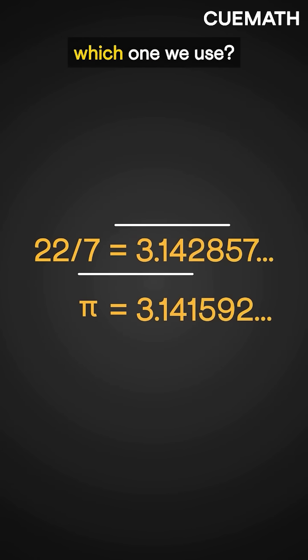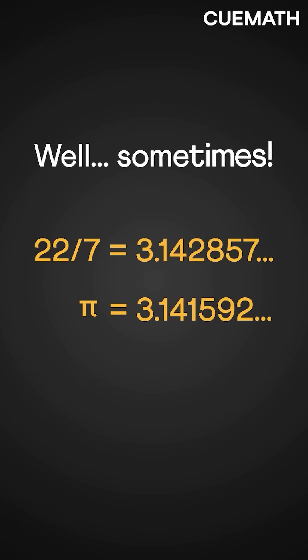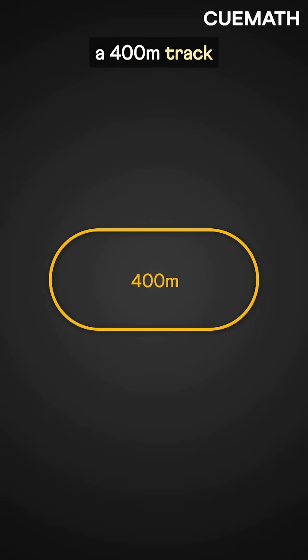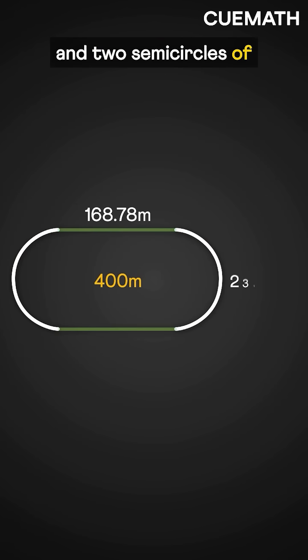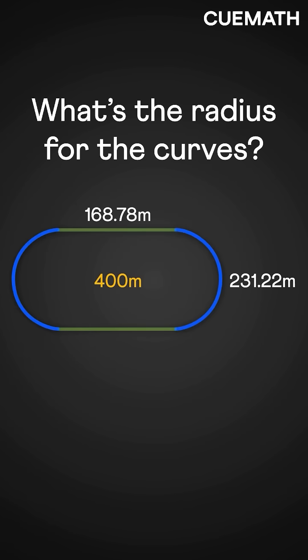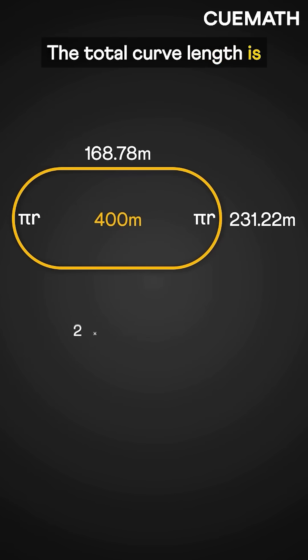Now, does it matter which one we use? Well, sometimes. Imagine designing a 400-meter track with two straight sections of 168.78 meters and two semicircles of 231.22 meters. What's the radius for the curves? The total curve length is 2 pi r.